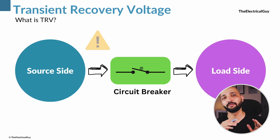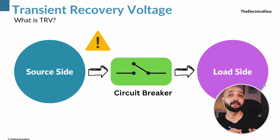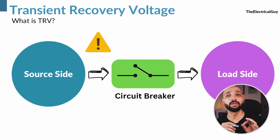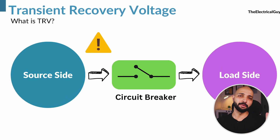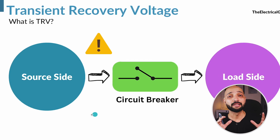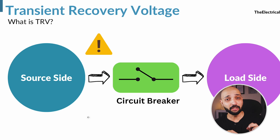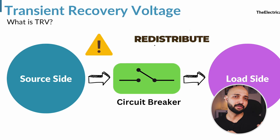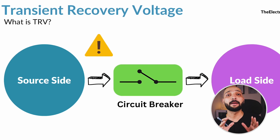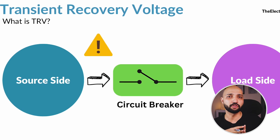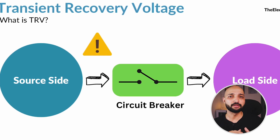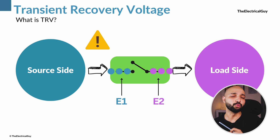Now, if there is a fault and the circuit breaker opens, these two networks will be disconnected from each other. Since the link between the two networks is broken, the trapped charges in each network will try to redistribute. As a result, each network develops a voltage that appears simultaneously across the respective terminals of the interrupter, labeled as E1 and E2, as you can see on the screen.